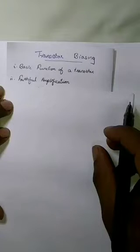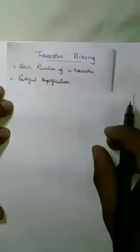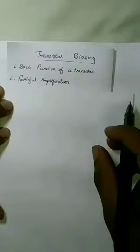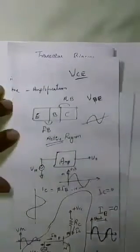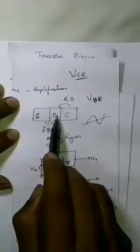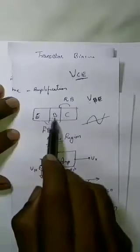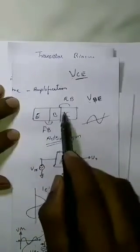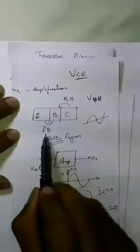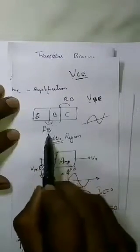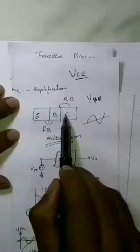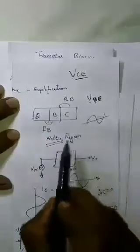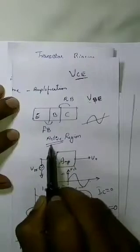In a transistor, the emitter-base junction is forward biased and the base-collector junction is reverse biased. A transistor has three regions: the emitter, base, and collector. The condition where the emitter-base junction is forward biased and the base-collector junction is reverse biased is called the Active Region.